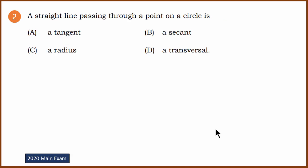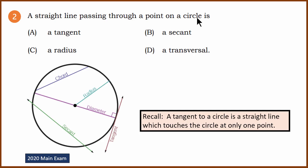Second question — a tangent question from the 2020 main examination. A straight line passing through a point on a circle — what is it? Options: tangent, secant, radius, transversal. Looking at the picture, tangent is the only one which touches at one point. Recall: tangent to a circle is a straight line which touches the circle at only one point. So the correct answer is tangent, A.